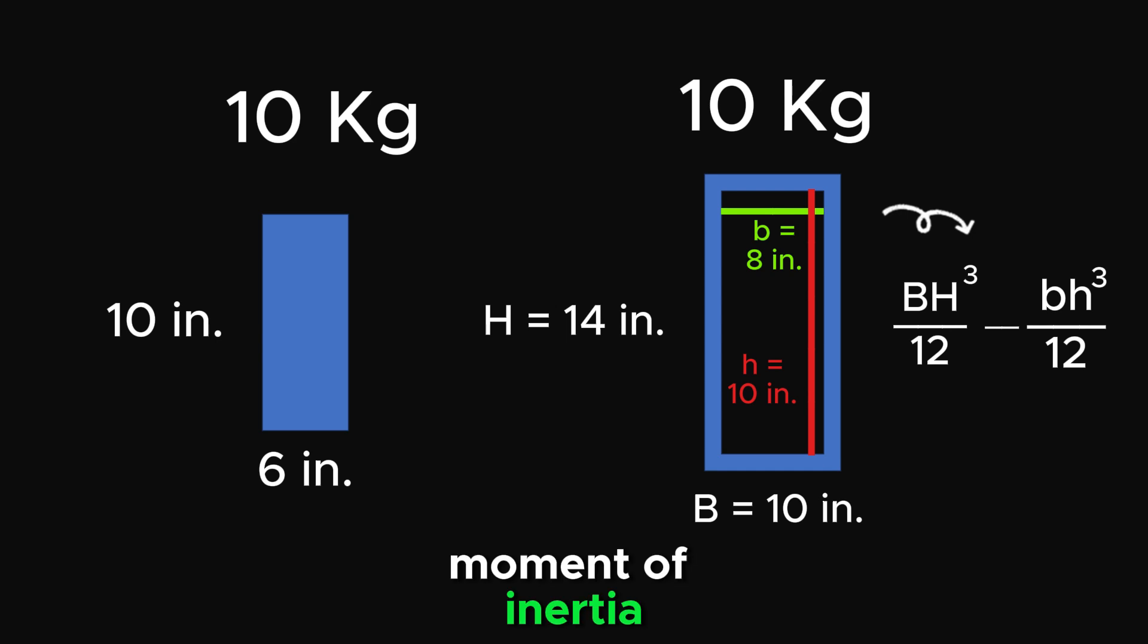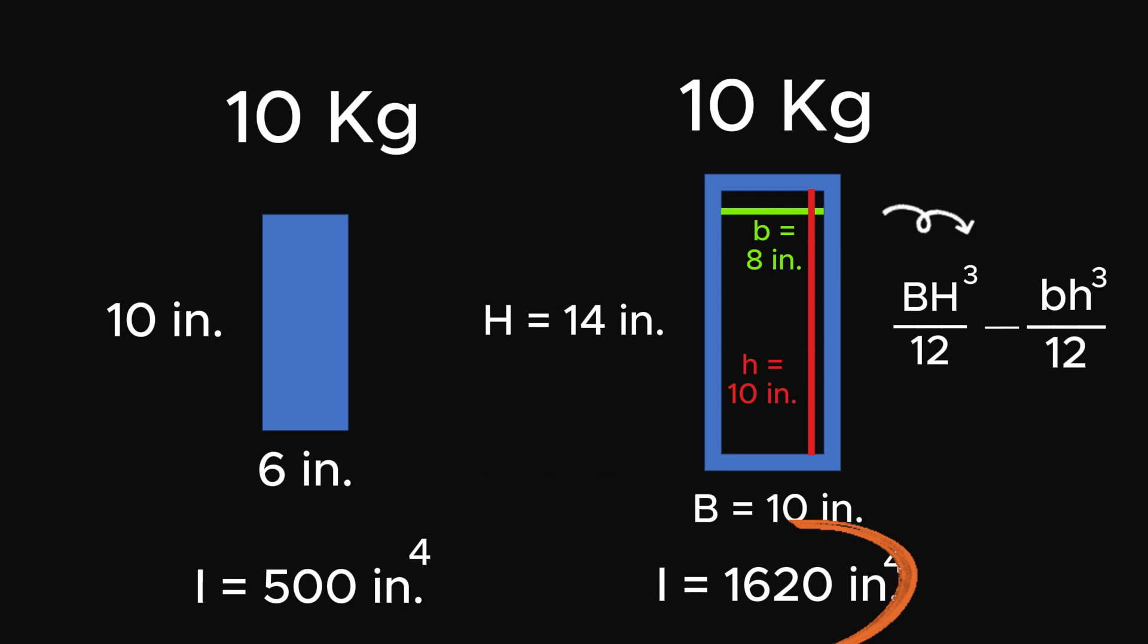The moment of inertia for each shape is calculated as shown. Despite having the same mass, the hollow tube offers more resistance because its mass is distributed further from the center.